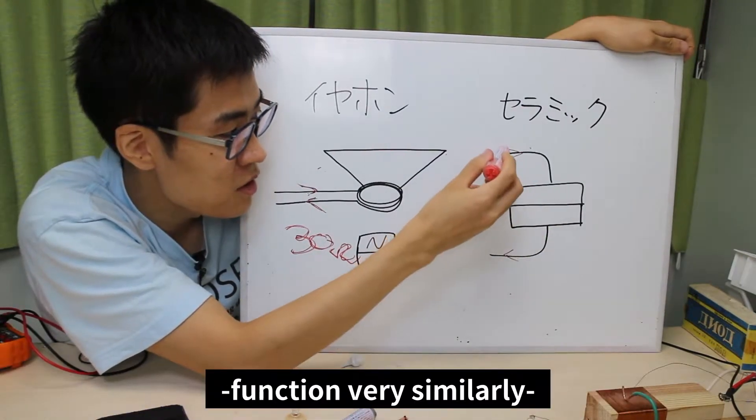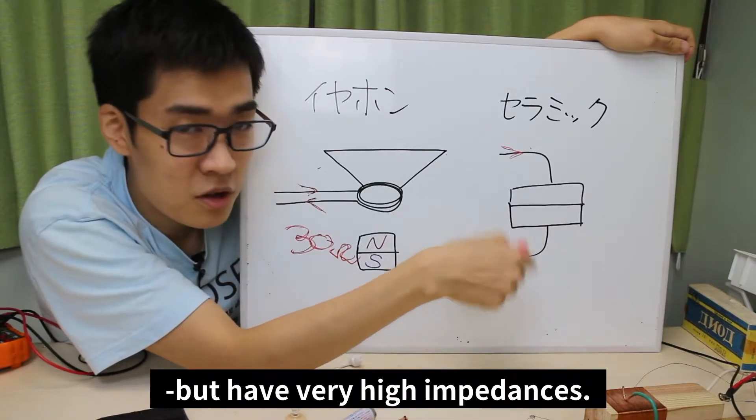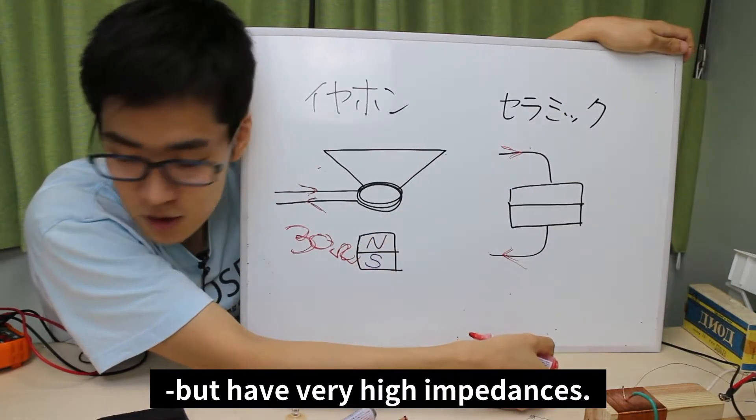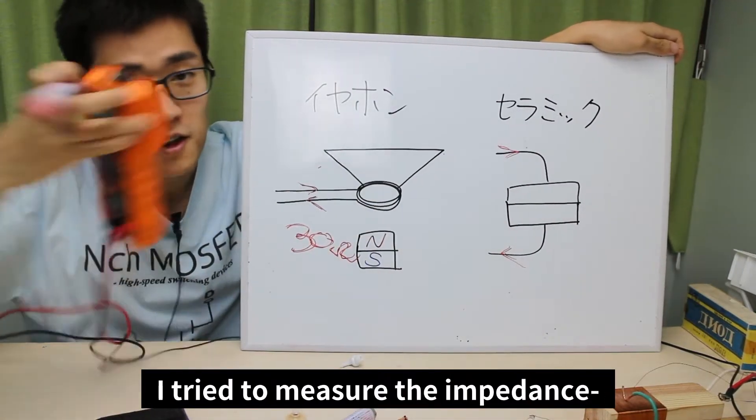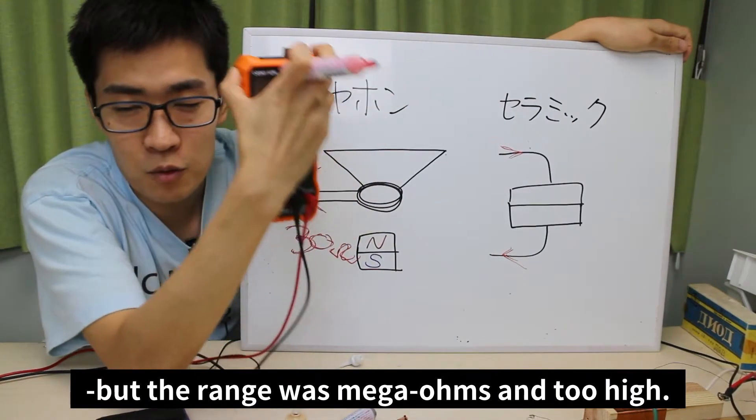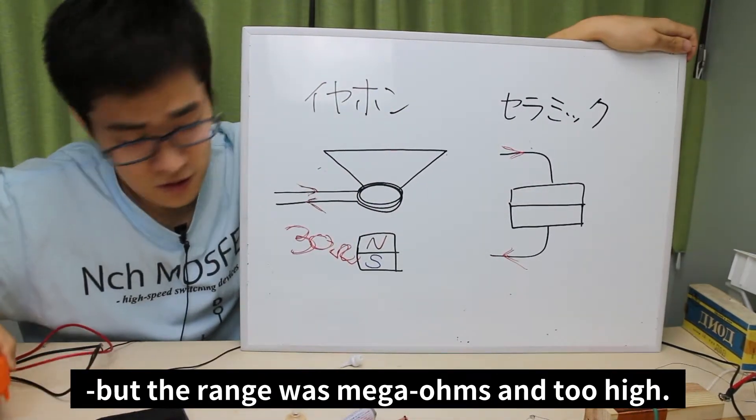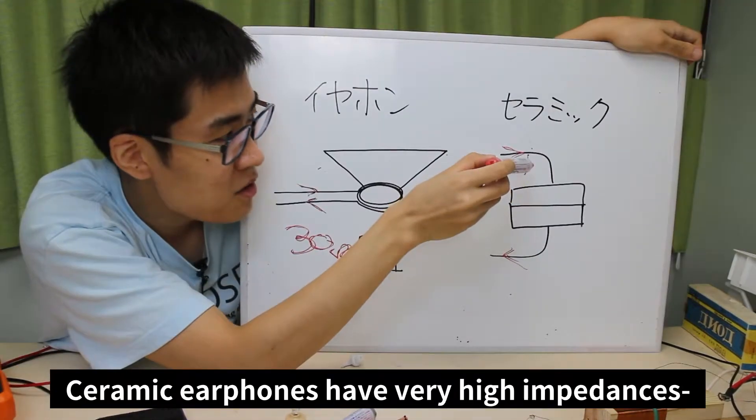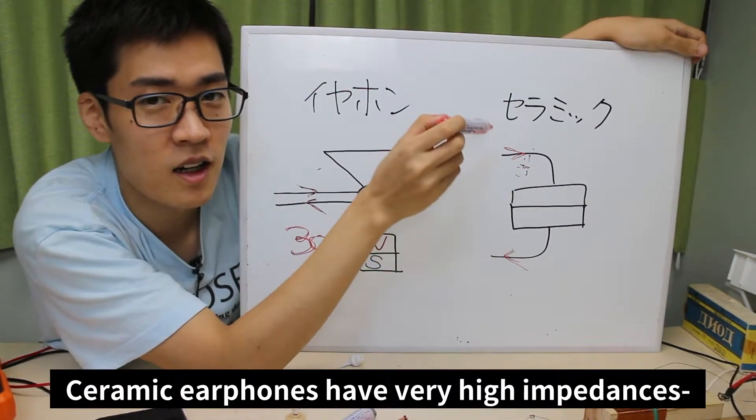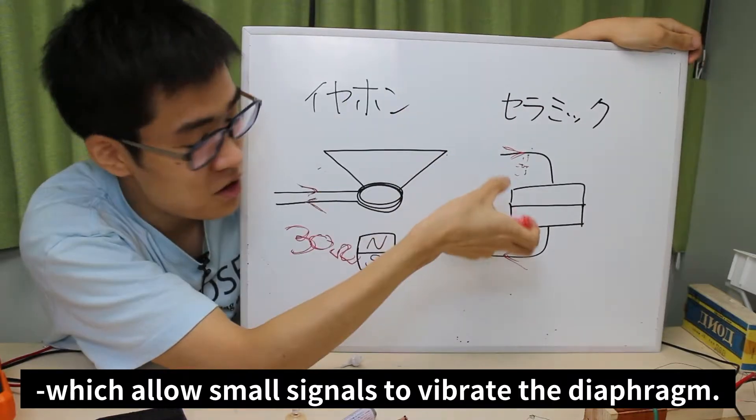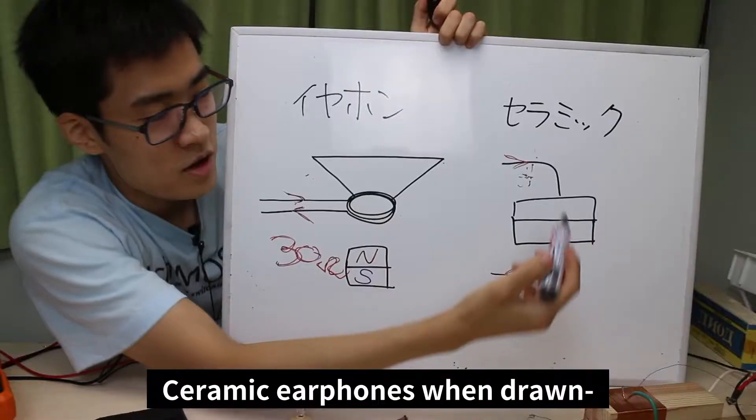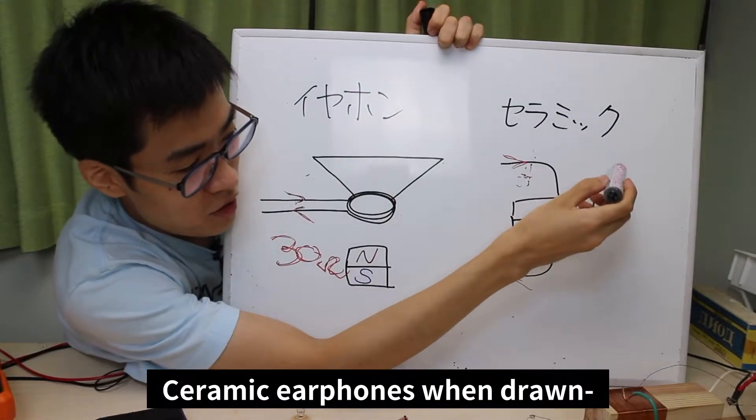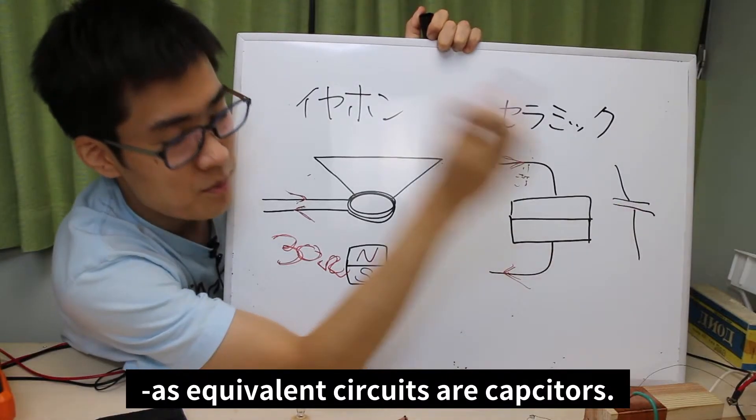On the other hand, ceramic earphones function very similarly but have very high impedances. I did try to measure the impedance but the range was in mega ohms and too high. Ceramic earphones have very high impedances, which allow small signals to vibrate the diaphragm. Ceramic earphones, when drawn as equivalent circuits, are capacitors.